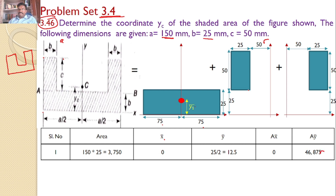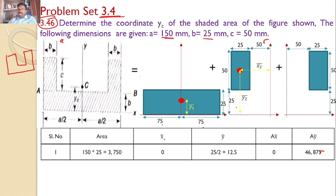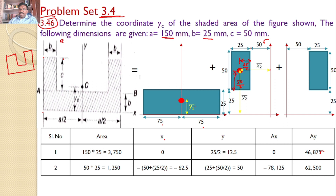For the second area, the centroid is at distance x2-bar and y2-bar. The distance from the centroid to the edge is 25 by 2, and the height distance is 50 by 2. Since area 2 is towards the left side of the y-axis, x2-bar is negative: minus of (50 plus 25 by 2), which gives minus 62.5. The y-coordinate is 25 plus 50 by 2, giving 50. Area equals 25 times 50, which is 1250. A times x-bar equals 1250 times minus 62.5, giving minus 78,125. A times y-bar gives 62,500.